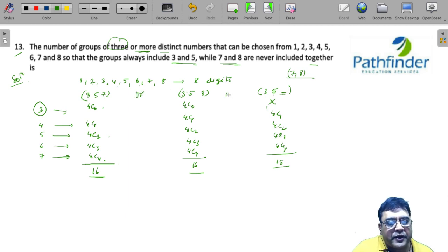And since these are all OR cases, just have to add up 16 plus 16, 32 plus 15, 47. That should be your answer.